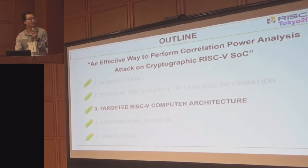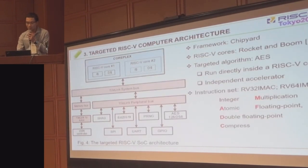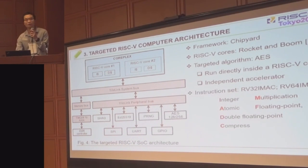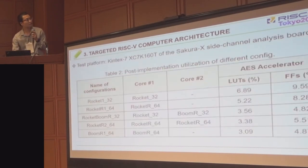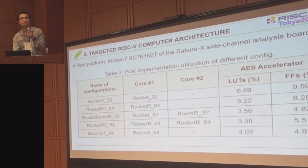Next, I want to talk about the targeted RISC-V computer architecture. Our paper shows a new system-on-chip architecture. It includes two popular RISC-V cores, and the CPA algorithm can run directly inside the RISC-V core or work as an independent accelerator. Table 2 shows a board evaluation and utilization of 5 different configurations of 32 or 64 feature successors.